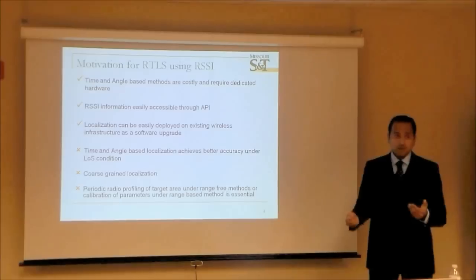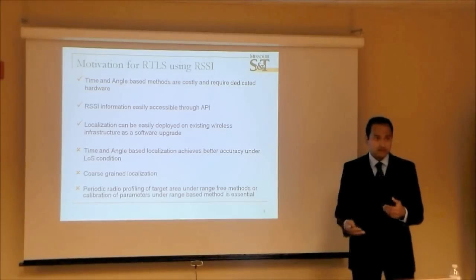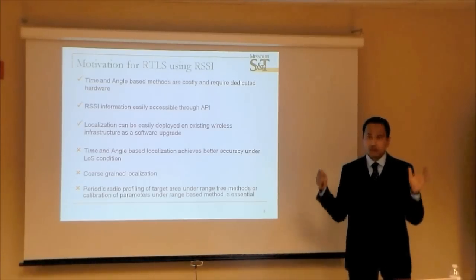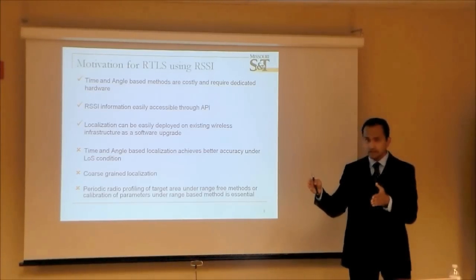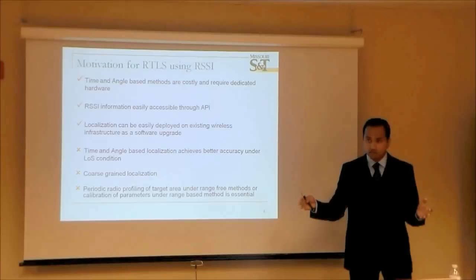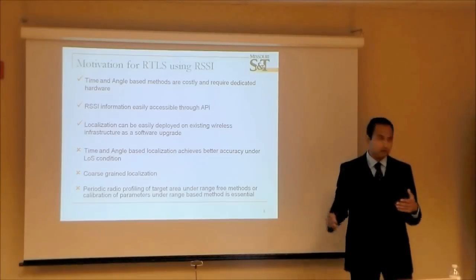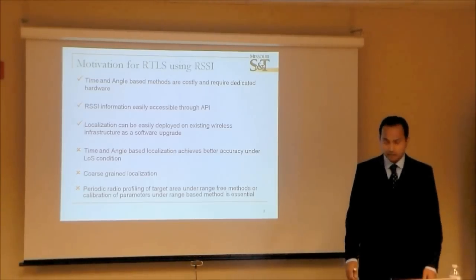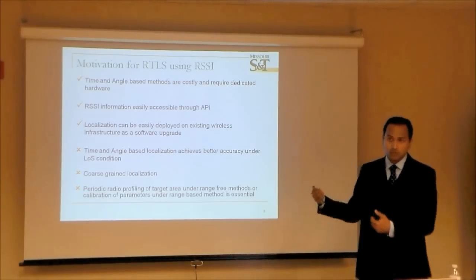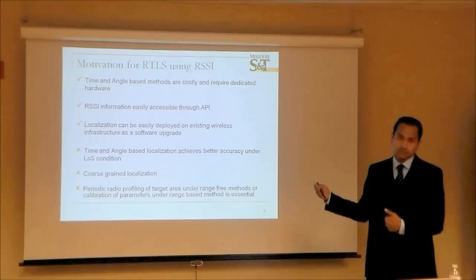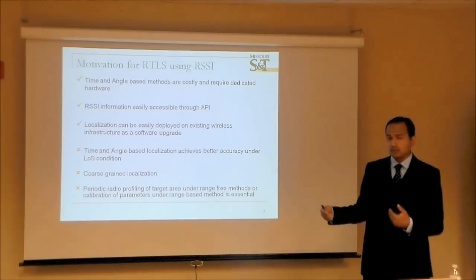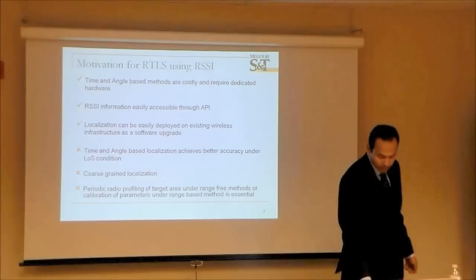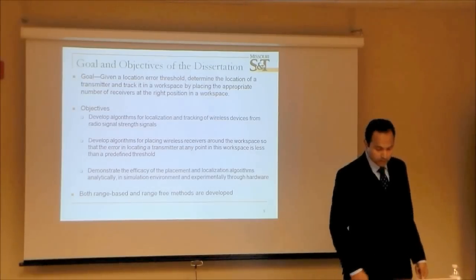Time and angle based methods can provide really good accuracy if you have a clear line of sight. But when you don't have line of sight and signals bounce and reflect around, you get really bad accuracy. One of the advantages of signal strength is that you can still be tolerant to a lot of non-line-of-sight signals.